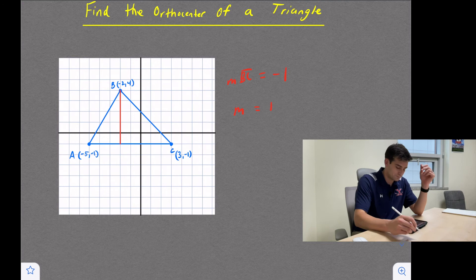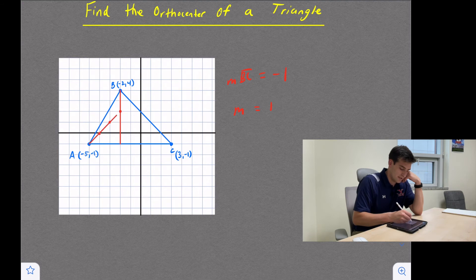Opposite reciprocal. So I'm going to start at point A, and I'm going to go up one, right one, up one, right one, up one, right one, so that I can draw my altitude.